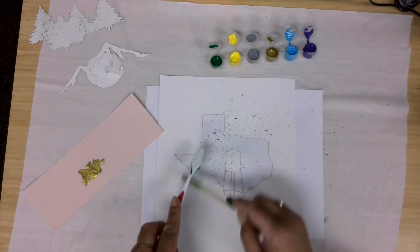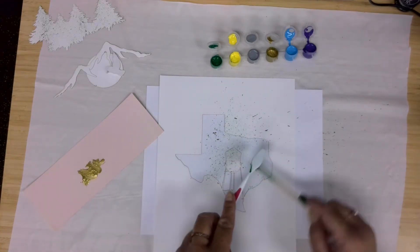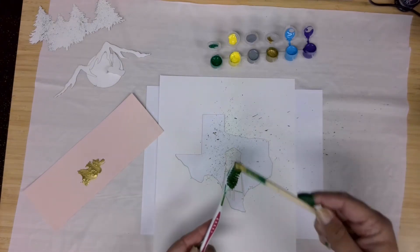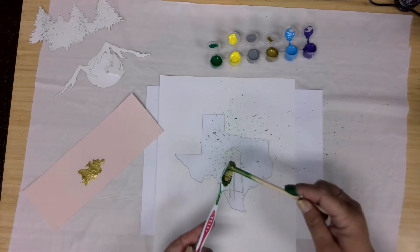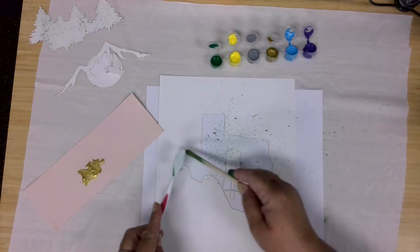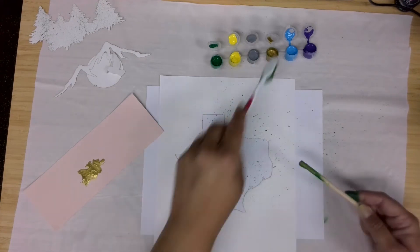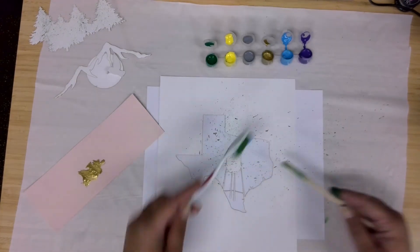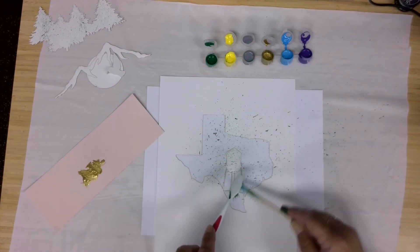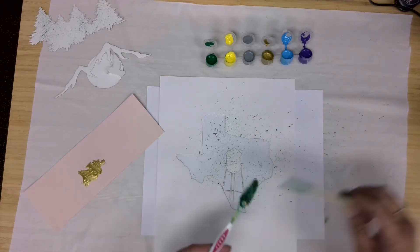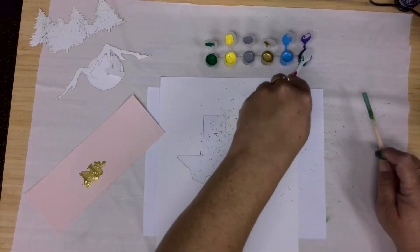Again the more paint you're using the bigger your splatters are going to be. You might get one that's pretty large like here. I've got a drip on my stick. So I don't want to use that. Let's get some blue.